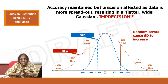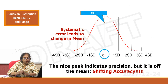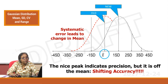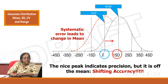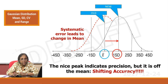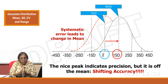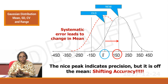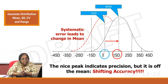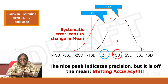Now look at this graph — you have an original graph where the original mean is x-bar, and after some time a new Gaussian forms with its mean shifted to the position that was originally 1 SD. What does this mean? The mean is shifting from position x to the 1 SD position, which indicates that systematic errors have entered your analytical system.